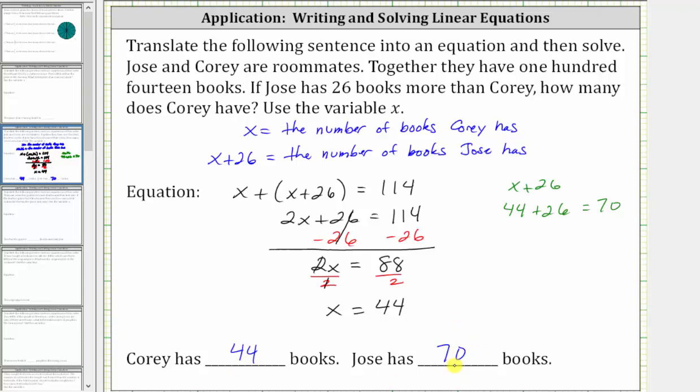Notice how 44 plus 70 equals 114. I hope you found this helpful.